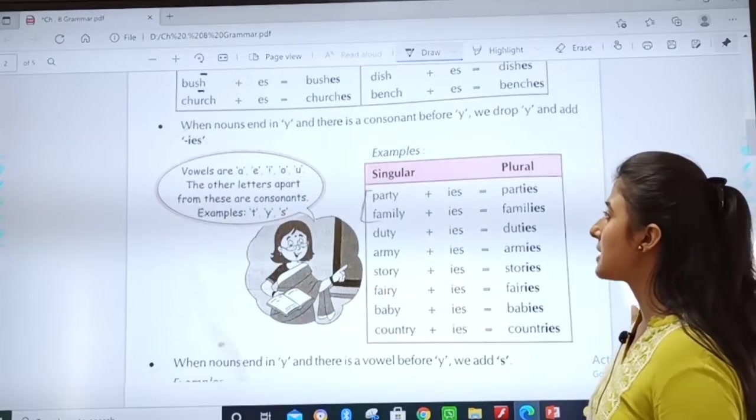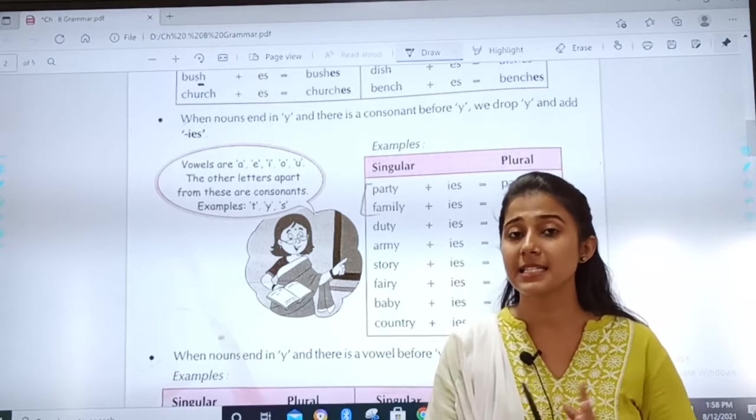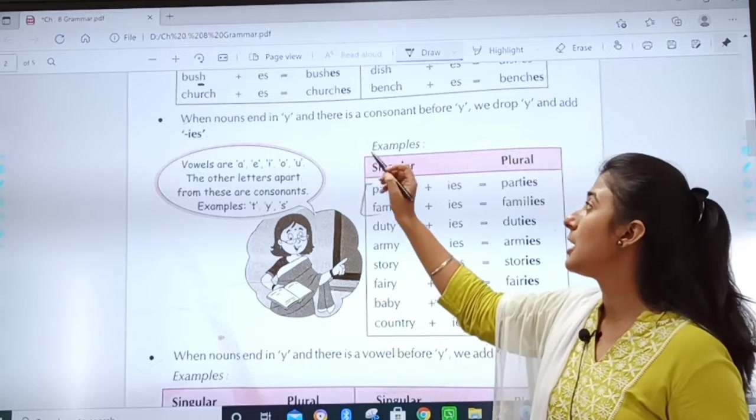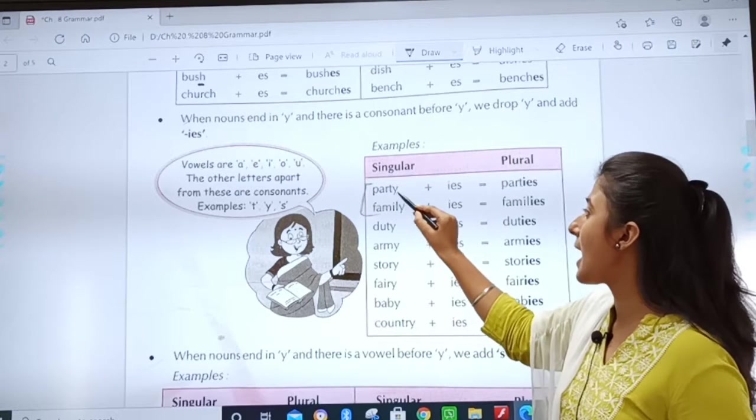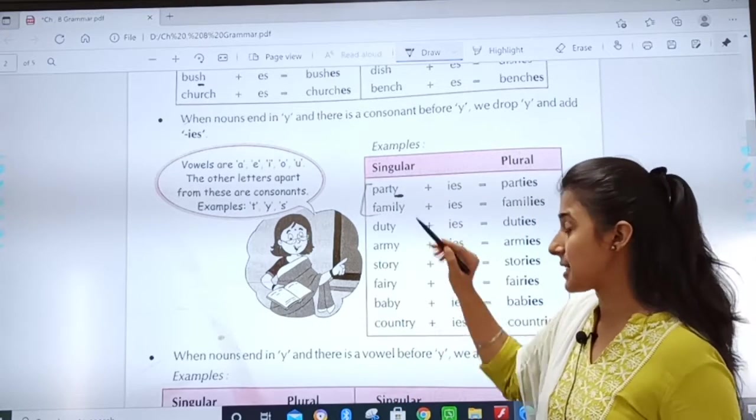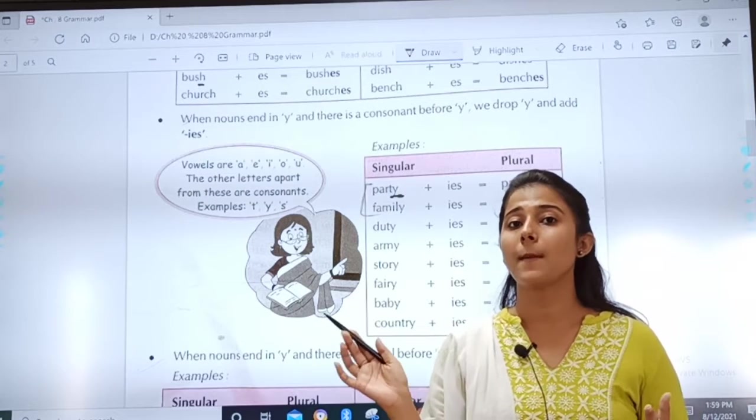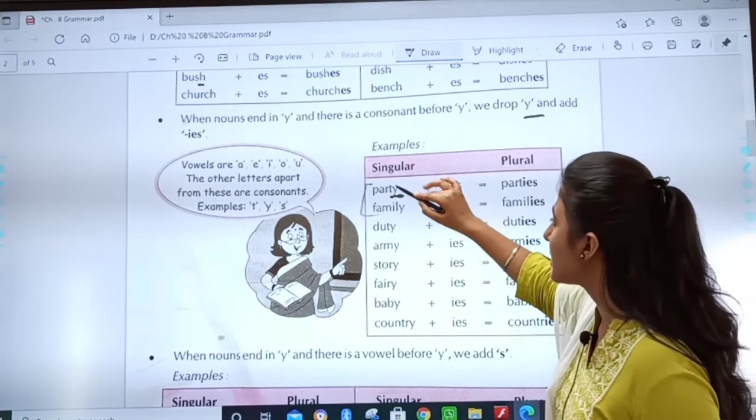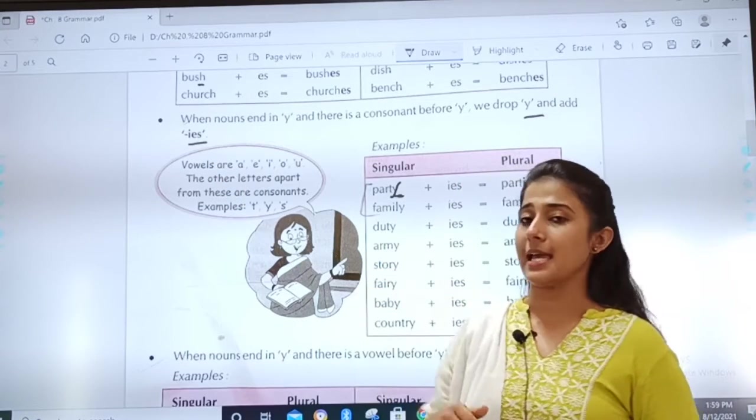Then, let us see what the third box tells us about. When nouns end in Y. You have to keep in mind the ending letters. In the previous pink box, S, CH, SH, X will be replaced, will be changed into plural by adding ES. And now, when the nouns end with Y. And there is a consonant before Y. That means, when a noun is ending with Y. And before that, it is a consonant. Consonant means alphabets apart from vowels. Right? So, what we have to do? We drop Y. That means, in place of Y. We drop Y and replace it with IES.